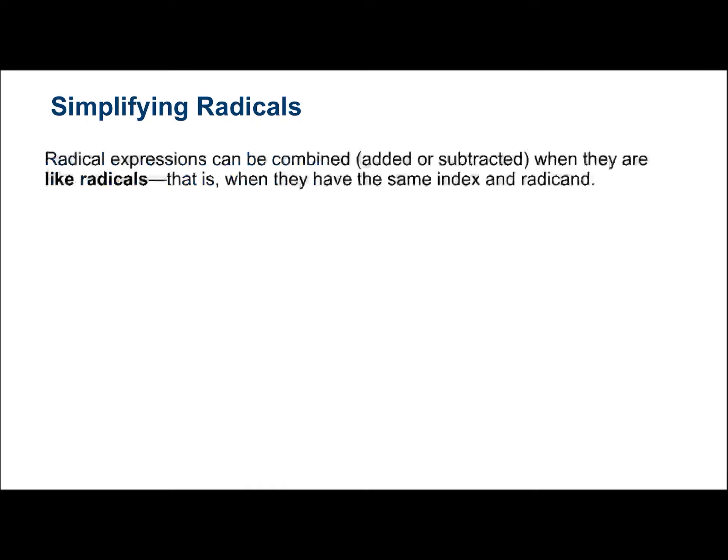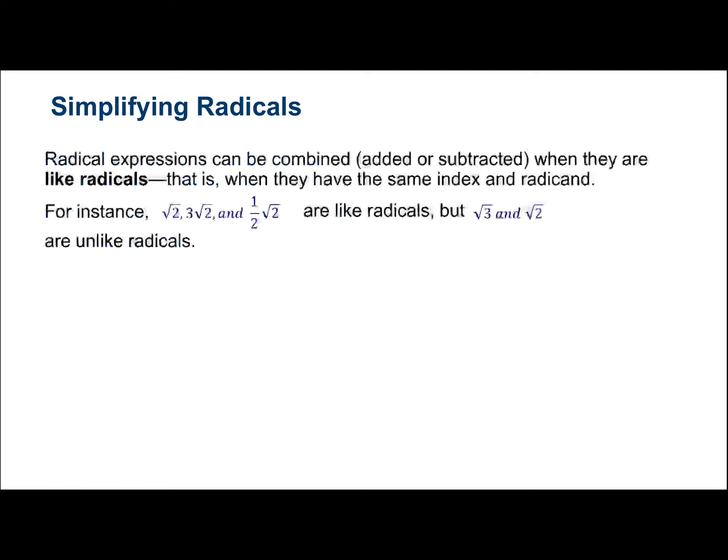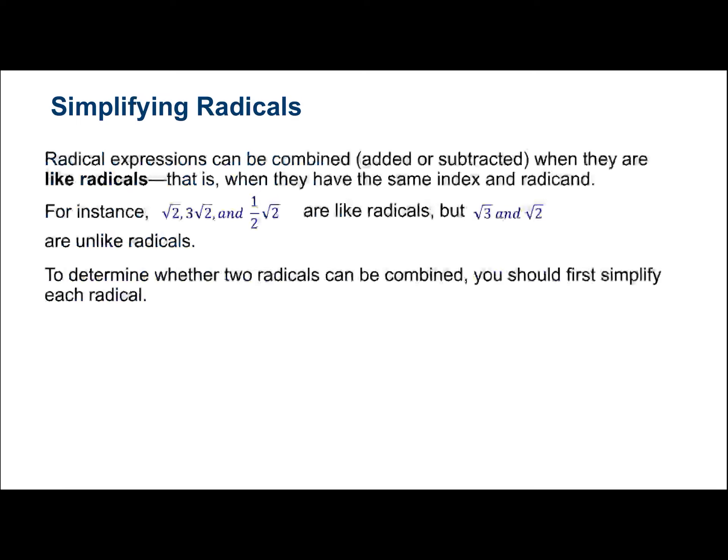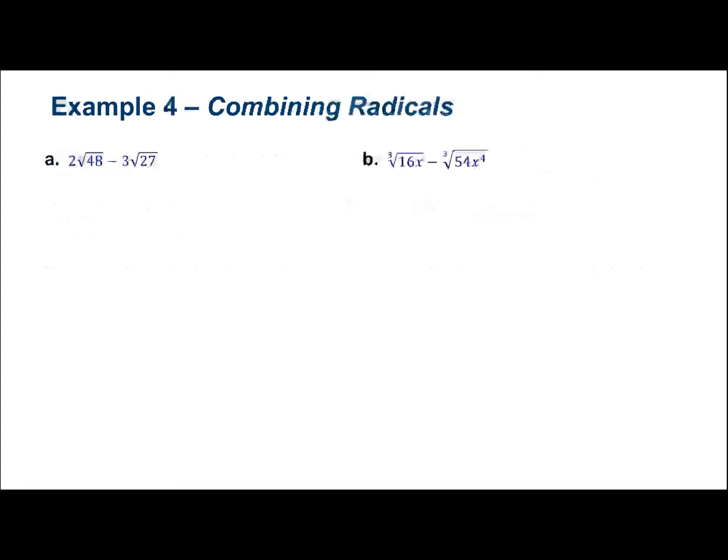For adding and subtracting radicals, we need like radicals — the same index and radicand. For example, square root of 2, 3 square root of 2, and one-half square root of 2 are all like terms. But square root of 3 and square root of 2 are not. To determine whether two radicals can be combined, you often have to simplify first before you can add or subtract.